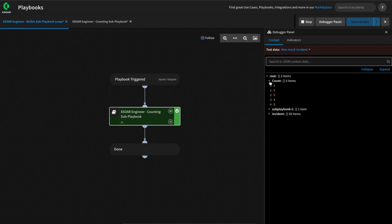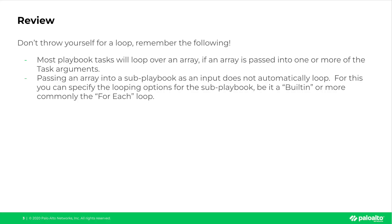Built-in loops are useful when you want to repeat the same steps until a certain condition is met — perhaps checking the status of an external ticket until it's closed. Note that built-in loops do use resources and have a default of 100 loops before they exit. To summarize: most playbook tasks will loop over an array if an array is passed into one or more task arguments. When passing an array into a sub-playbook as input, it does not automatically loop — for that, you can specify the looping options, using either the built-in loop or more commonly the for-each loop. Thanks for watching and we'll see you in the next one.